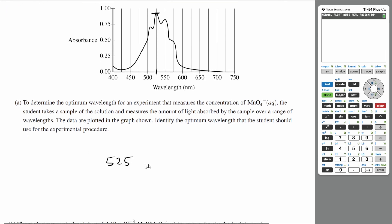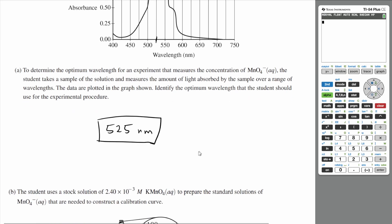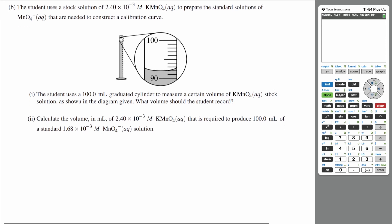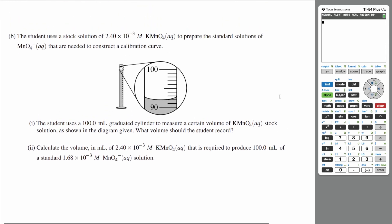So we want to use the 525 nanometer mark because that produces the highest absorbance. Let's go on to part B. The student uses a stock solution of 2.40 times 10 to the negative 3 molar potassium permanganate to prepare the standard solutions of permanganate that are needed to construct a calibration curve.